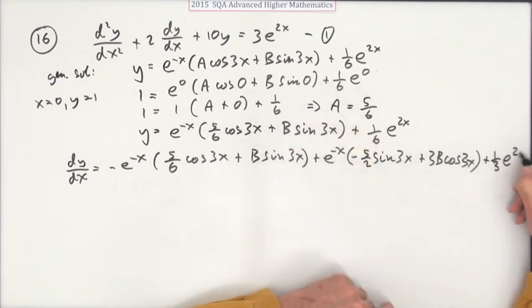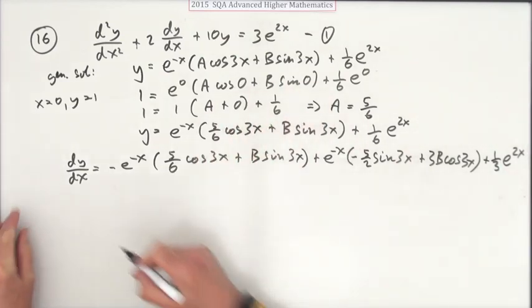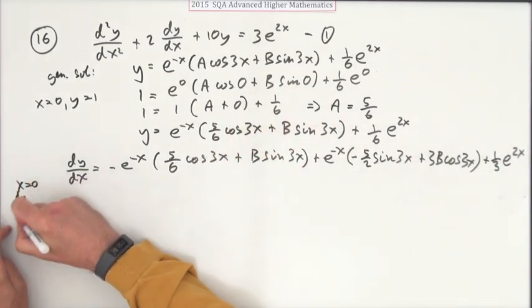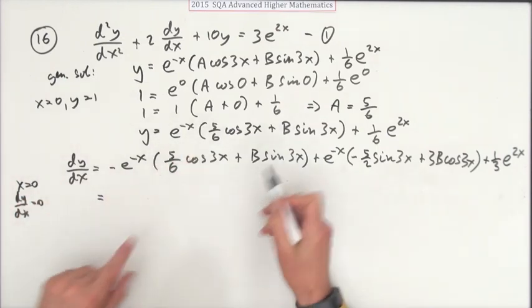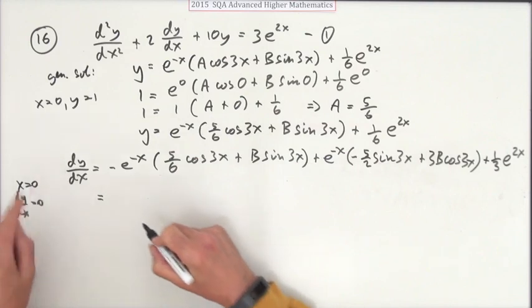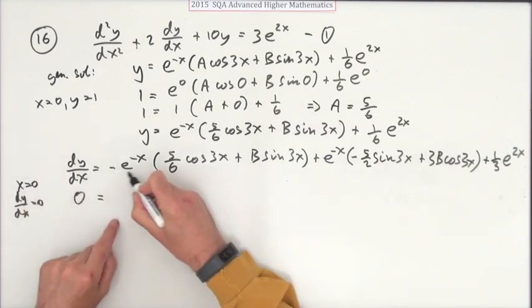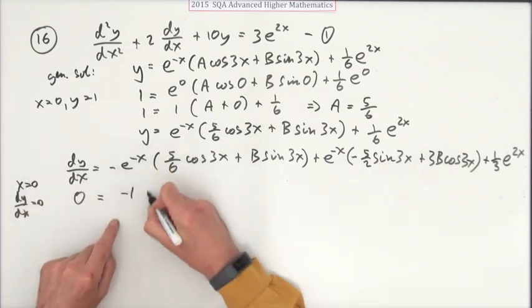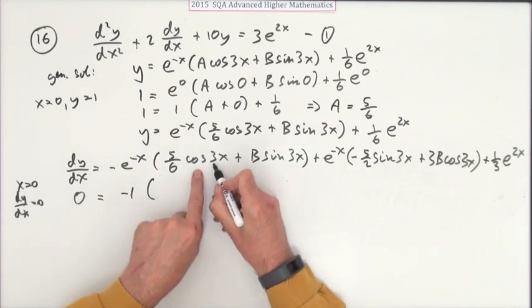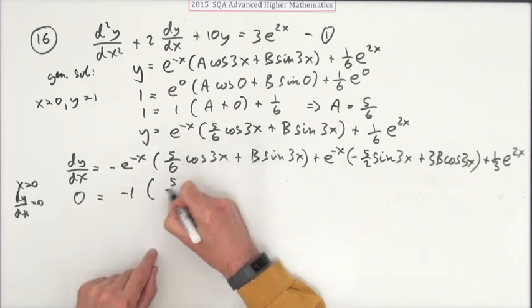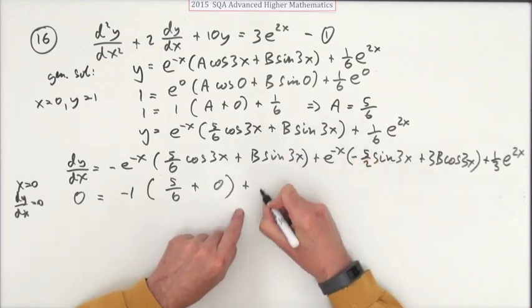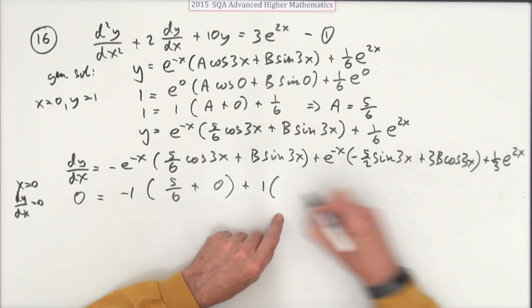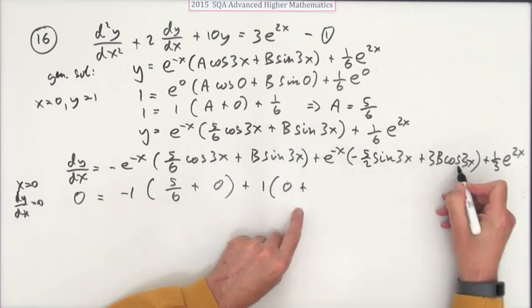A third of e^(2x). Now we had x is 0 and the derivative is 0. We'll put in, maybe this time I'll just go for those zeros and the ones then. So that is 0. Negative e^0 will be -1. Cos of 0 is 1, so that'll be 5/6. Sin of 0 is 0, so that'll be 0. Plus e^0 is 1. Sin 0 is 0.